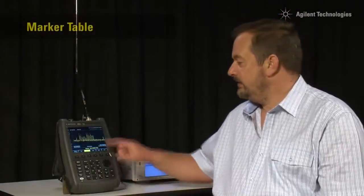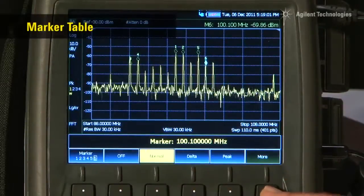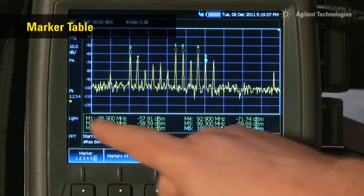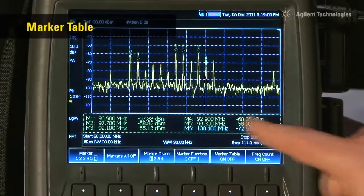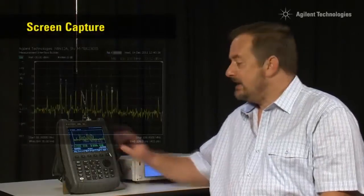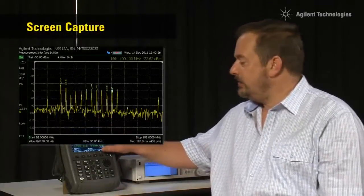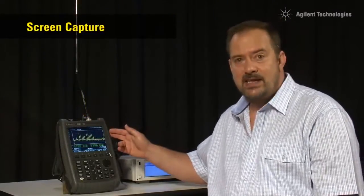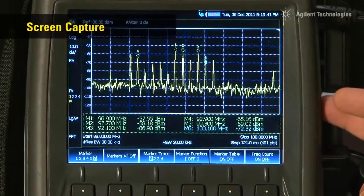Here you can see I have turned on all six markers, and if I press the more button, we can now turn on the marker table, which shows the frequency and amplitude levels of all six markers simultaneously. We can now capture that screen and save it as a JPEG file, either to the internal memory, to a USB memory stick, or the mini SD card.